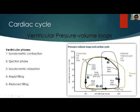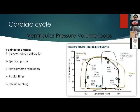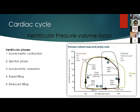Next, we discuss the ventricular pressure-volume loop curves. The ventricular phases are: isovolumetric contraction phase, followed by the ejection phase, then isovolumetric relaxation, followed by rapid filling and reduced filling. The isovolumetric contraction phase occurs between mitral valve closure and aortic valve opening. It is followed by the ejection phase and isovolumetric relaxation phase, which is between aortic closure and mitral opening, and then rapid filling and reduced filling.